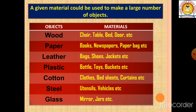A given material can also be used to make a large number of objects. For example, from wood we can make chairs, tables, beds, doors, etc. From paper we can make newspapers and paper bags. From leather we can make bags, shoes, and jackets. From plastic we can make bottles, toys, and buckets. From cotton we can make clothes, bed sheets, and curtains. From steel we can make utensils and vehicles. From glass we can make mirrors and jars.